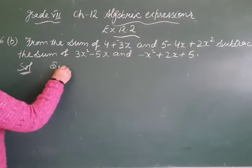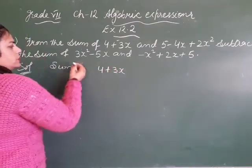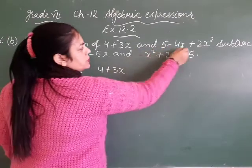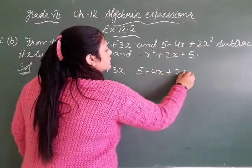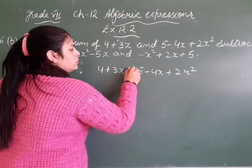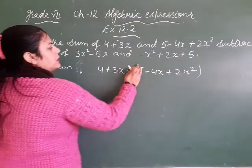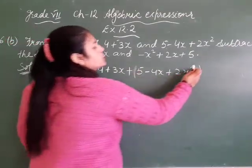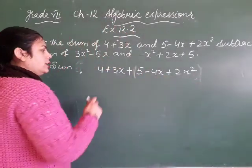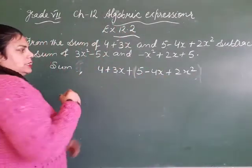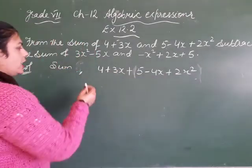Sum of (4 + 3x) and (5 - 4x + 2x²). In dono ko hum sum karna hai, so we apply a plus sign between them. Plus sign hai, toh bracket lagane ki zaroorat nahi hai. Agar subtraction ka sign hota, toh hum bracket lagate — kyunki minus bahar hone par andar ke sabhi expressions ke signs change ho jaate hain. So now we add them.